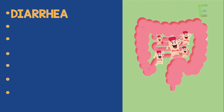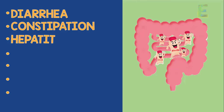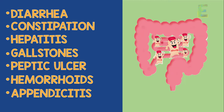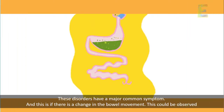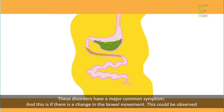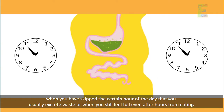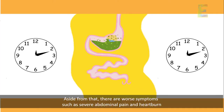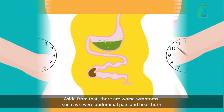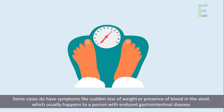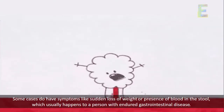Diarrhea, constipation, hepatitis, gallstones, peptic ulcer, hemorrhoids, and appendicitis. These disorders have a major common symptom, and this is if there is a change in the bowel movement. This could be observed when you have skipped the certain hour of the day that you usually excrete waste, or when you still feel full even after hours from eating. Aside from that, there are worse symptoms such as severe abdominal pain and heartburn. Some cases also have symptoms like sudden loss of weight or presence of blood in the stool, which usually happens to a person with an endured gastrointestinal disease.